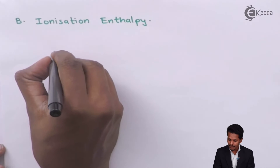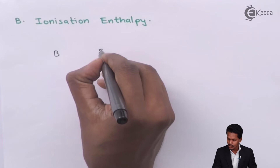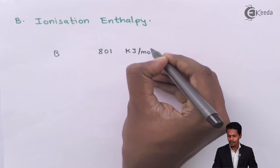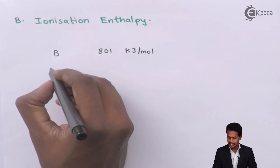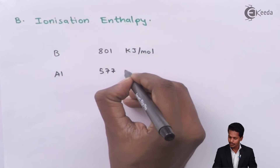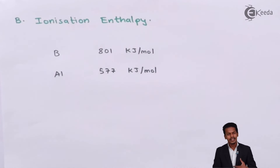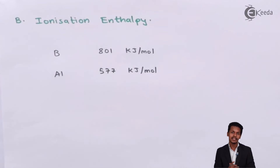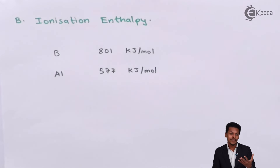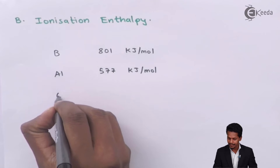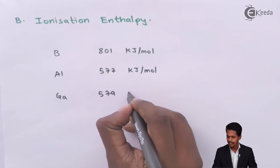Boron has an ionization enthalpy of 801 kJ/mol, and for Aluminium it is 577 kJ/mol. As expected, Boron, being the first element with a smaller size and higher nuclear charge, requires more energy to remove the outermost electron. Aluminium requires less energy because it has a larger size. But for Gallium, it has been found to be 579 kJ/mol — there is no large difference; in fact, the difference is very marginal compared to Aluminium.